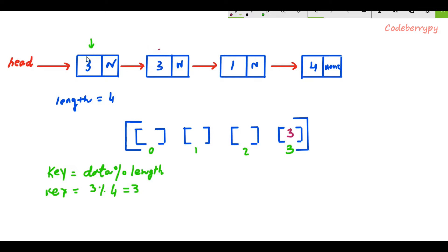Similarly, we move forward down the linked list, take the data from the second node, pass it through the key equation, and check which bucket it goes into. For the second node the data is also 3, and 3 % 4 again returns 3. This means it will try to enter the same bucket that already contains 3, which means we detect a collision. This is the basic concept of how to determine a collision.